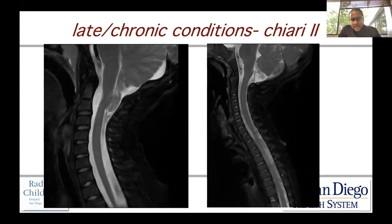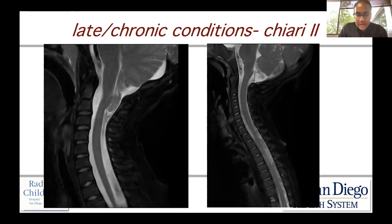Children that have a symptomatic Chiari 2 are typically symptomatic with lower cranial nerve dysfunction and require ventilatory support. They suffer from central sleep apnea and may even be trach or vent dependent. These kids can get very sick if their Chiari 2 rears its head in what's called a Chiari 2 crisis — those kids need urgent attention if they come to your clinic or ER.